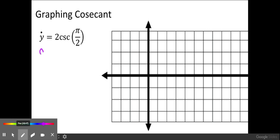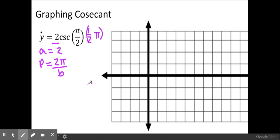So for this function a is 2 because 2 is the number in front of cosecant and my formula for period for cosecant is 2π over b. So in this case we have π over 2 which is the same thing as 1 half π. So my b is 1 half. So 2π over 1 half is the same thing as 2π times 2 which gives me 4π.